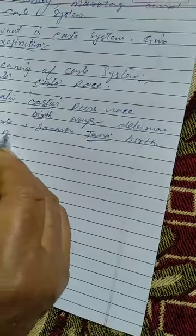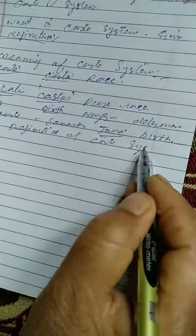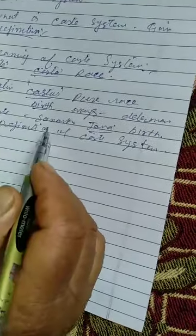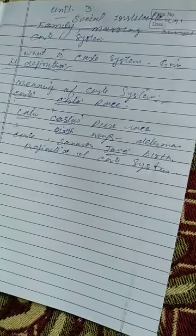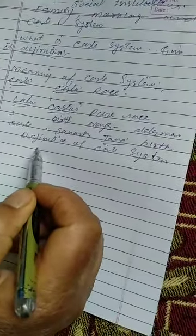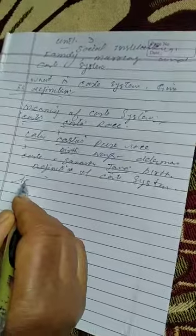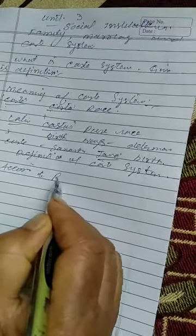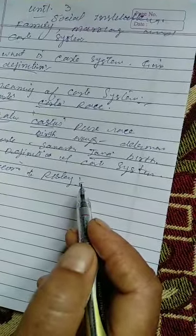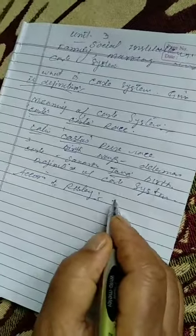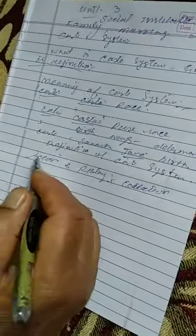Now we will take some definitions. Definitions of caste system. To know the better meaning of the caste, it is necessary for us to look at the definition of caste system given by different sociologists and psychologists. According to R.S. Lee, caste is a collection of families or group of families bearing a common name.